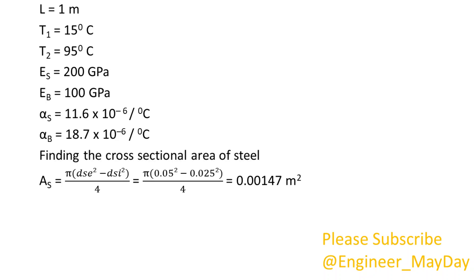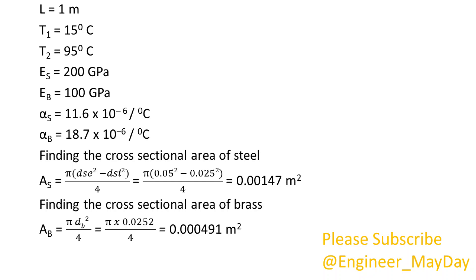Finding the cross-sectional area of steel: AS equals 0.00147 squared meters. Finding the cross-sectional area of brass: AB equals 0.000491 squared meters.